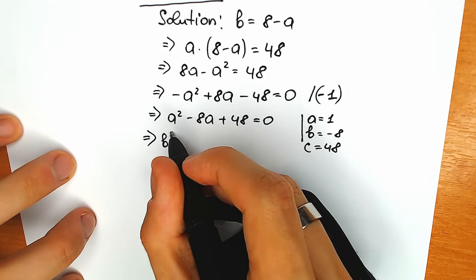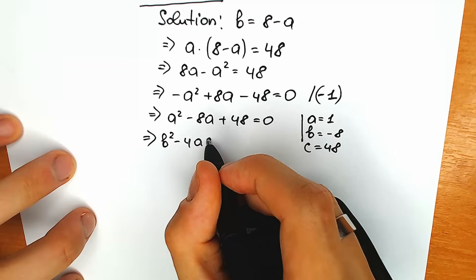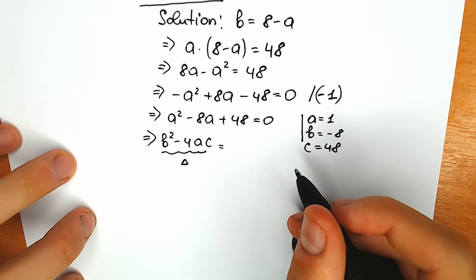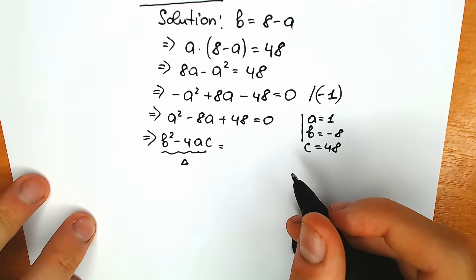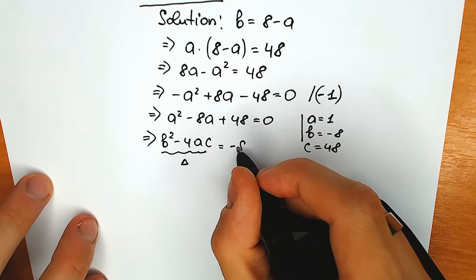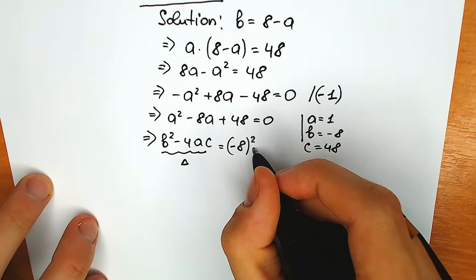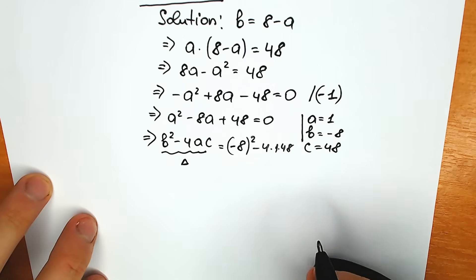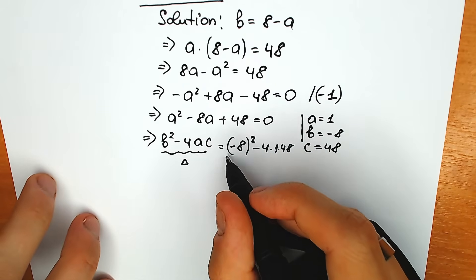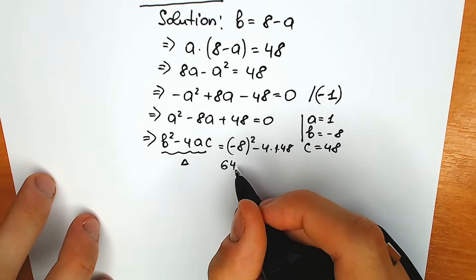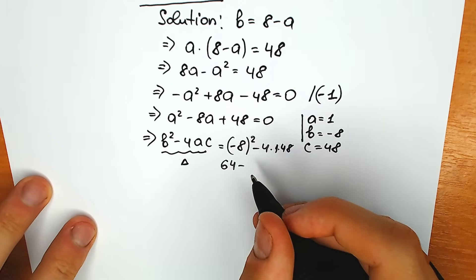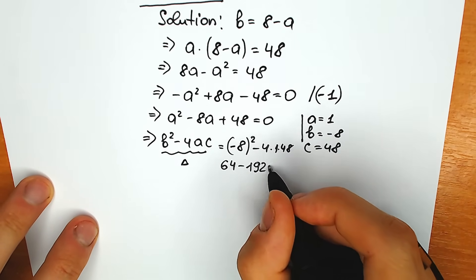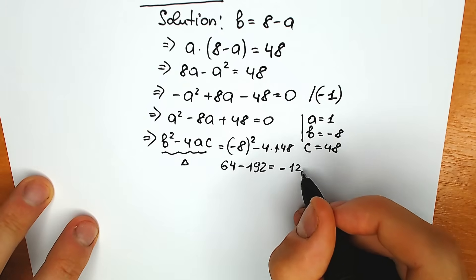So our discriminant equals b squared minus 4ac. Let's plug in each element: b squared is minus 8 squared, minus 4 times 1 times 48. Let's simplify — we have 64 minus 4 times 48. 4 times 48 equals 192, and 64 minus 192 equals minus 128.